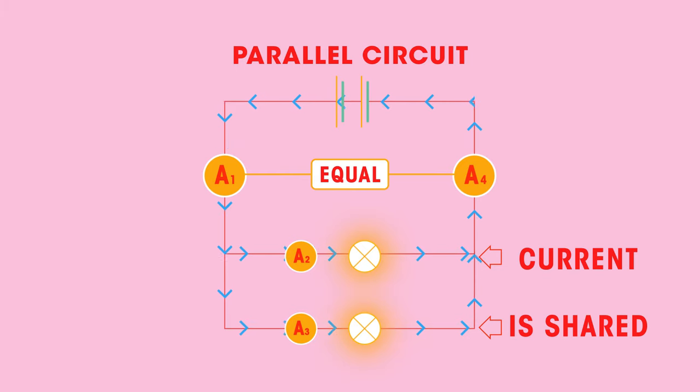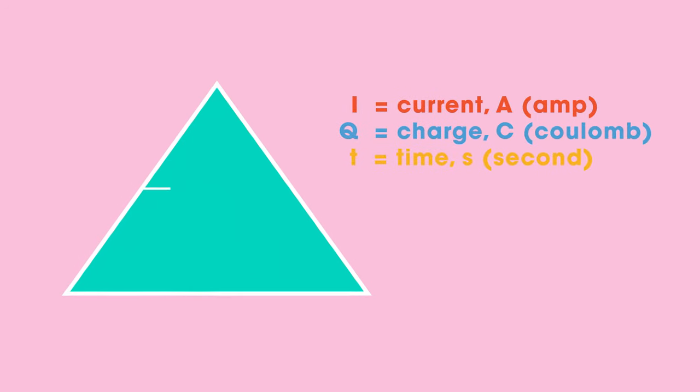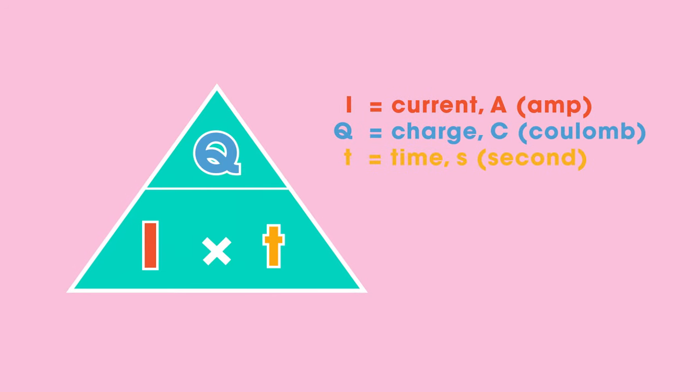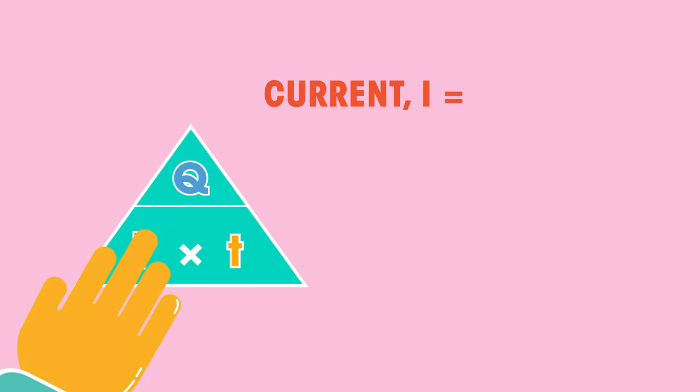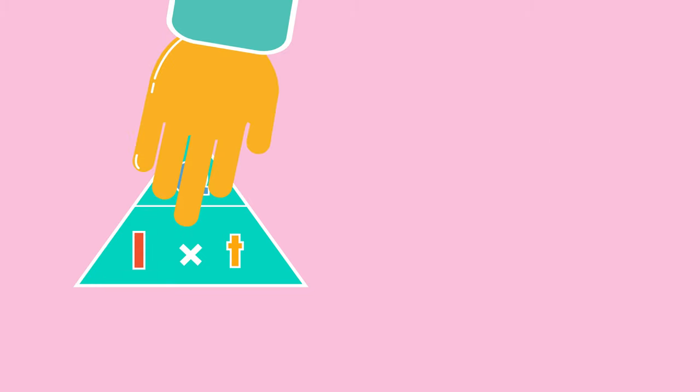To calculate the current in a circuit we can use this formula: current equals charge divided by time. It makes sense that current is charge divided by time because current is the rate of flow of charge. Or I actually find it easier to remember QIT: charge equals current times time.